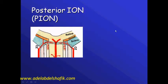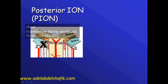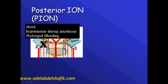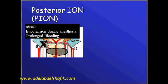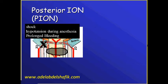Posterior ischemic optic neuropathy occurs where the circulation supplying the posterior part is affected. This can be the case in shock, in hypotension during anesthesia, or in cases of prolonged bleeding.